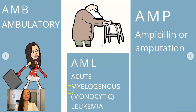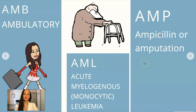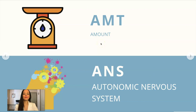AML is acute myelogenous or monocytic leukemia — sometimes these words are used interchangeably. This type of leukemia is seen more often in older adults. AMP could be ampicillin or amputation, so again context is important, and whenever in doubt just spell the word out. AMT is amount. And ANS is the autonomic nervous system.